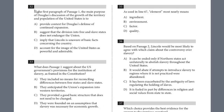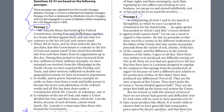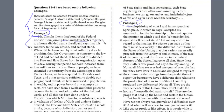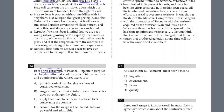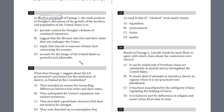We're only answering questions from Passage 1. Question 32 asks: in the first paragraph of Passage 1, what is the main purpose of Douglas's discussion of the growth of territory and population of the US? This is a specific question with a reference to the first paragraph, where Douglas argues that the union has prospered while divided between free and slave states. Looking at the answer choices, we need something specifically about free and slave states. The answer is B: to suggest that the division into free and slave states does not endanger the union.